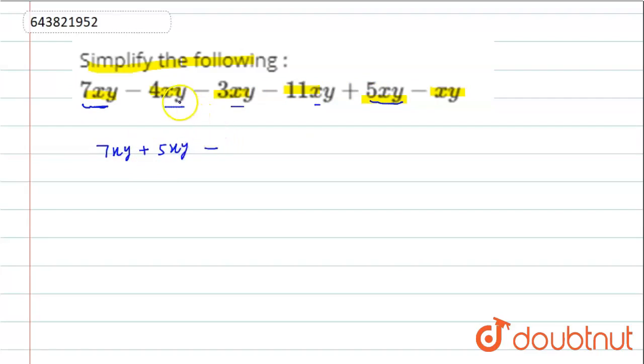Now we will take negative terms simultaneously. We will take minus common from all the negative terms. So this will be equal to 4xy, 3xy plus 11xy plus xy.